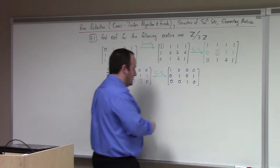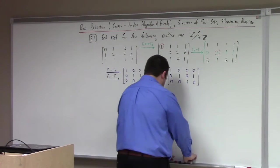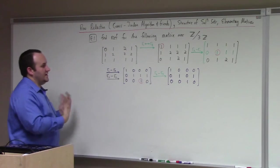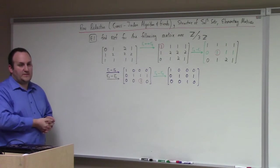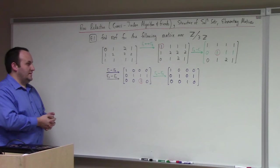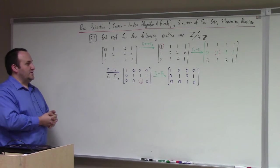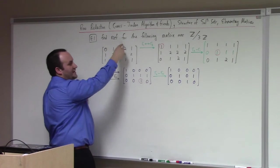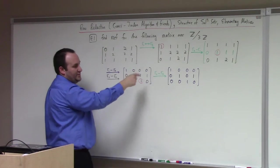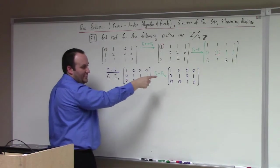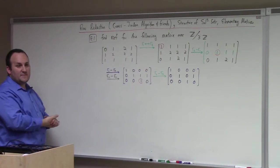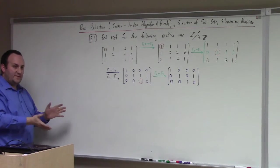Now, to make this interesting: if I interpret this as an augmented coefficient matrix of a system of equations, it's not that interesting because, as it stands, if this was x, y, and z, what we would have found is that x equals 0, y equals 1, z equals 0. There would be a unique solution. Not very exciting.